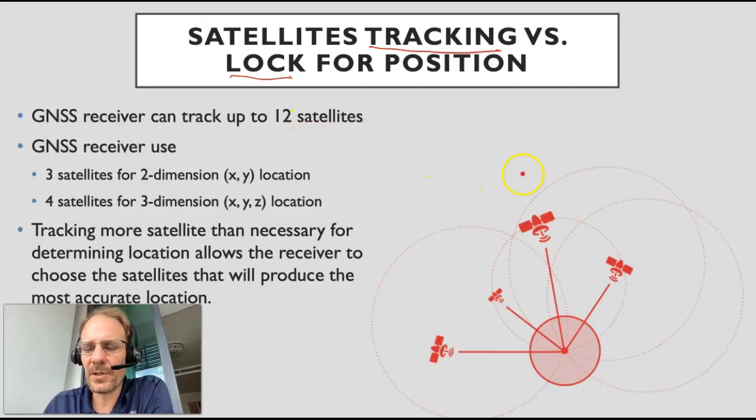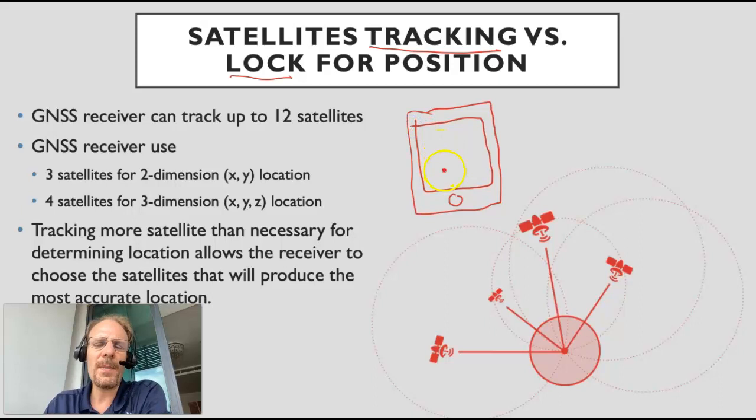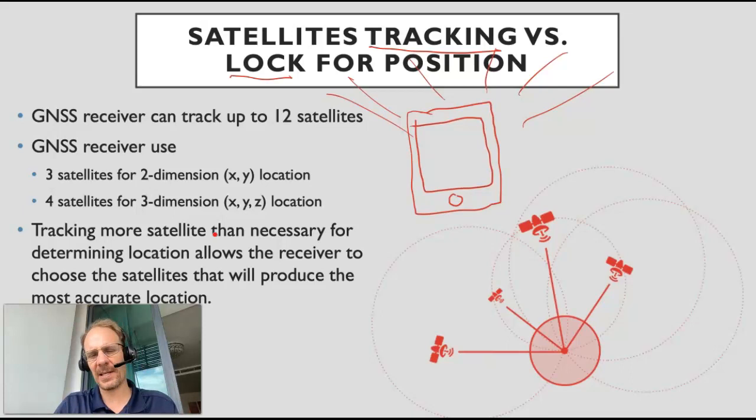A GPS receiver - that could be your phone, your smartphone. The way my smartphone works is it tracks multiple satellites. It finds all these satellites up there, gets the signal and tracks them. Then it chooses from those 12 satellites which satellites are the best for identifying your location.